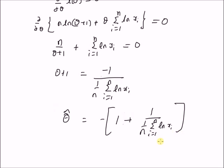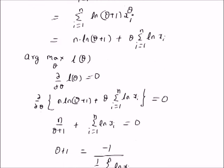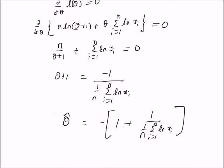Thus, for a distribution defined as f of x equal to theta plus 1 times x power theta for the interval 0 to 1, the maximum likelihood estimate of theta is given by negative 1 plus 1 over the average of the log of x_i's — the sample mean of the logarithm of the observations. Thanks for watching.